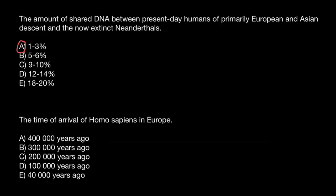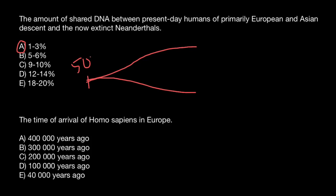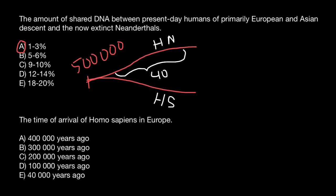Imagine that about half a million years ago, humans and Neanderthals diverged from each other — 500,000 years ago. One branch became Homo neanderthalensis and the other Homo sapiens. Homo Neanderthals occupied Europe for about 400,000 years. Then there was the arrival of Homo sapiens about 40,000 years ago.